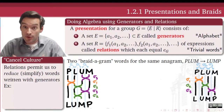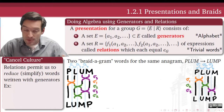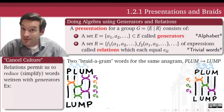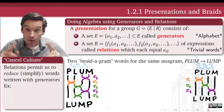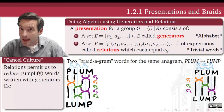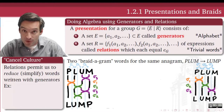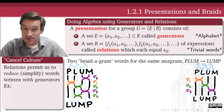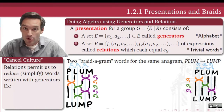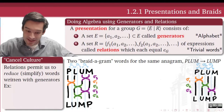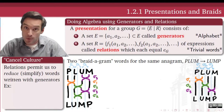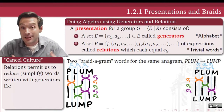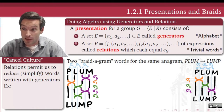Deciding whether two words in a group presentation represent the same element is called the word problem for a group presentation, and it is a very difficult problem in general. In fact, the word problem for groups is unsolvable by any efficient algorithm — such an algorithm has been proven not to exist. This makes it an unwieldy approach in general, but it has a lot of utility for the simple cases we'll study this semester.